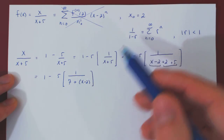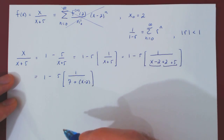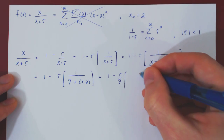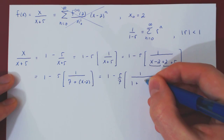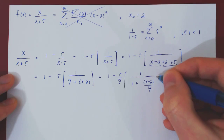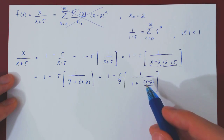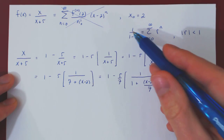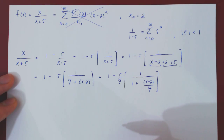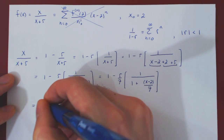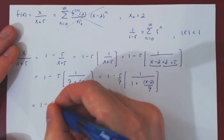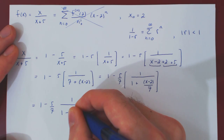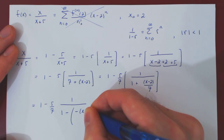Now we're getting closer to 1 over 1 minus r. We have a 7 here instead of the 1. We can obtain a 1 if we factor 7 from the denominator. And now we're almost there — if we ignore the 1 in the constant multiple, we have 1 over 1 plus something. We need 1 over 1 minus something. The plus can be changed into a negative negative. So we now have 1 minus 5 over 7 times 1 over 1 minus negative x minus 2 over 7.